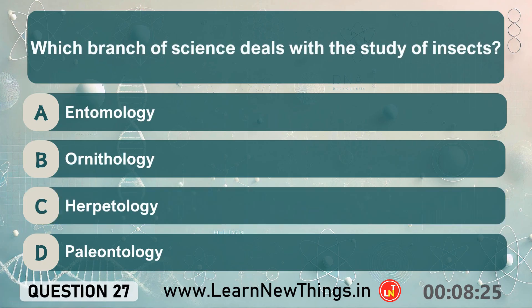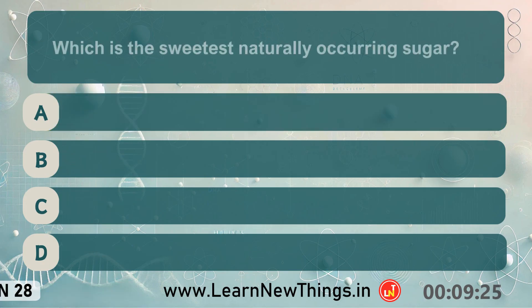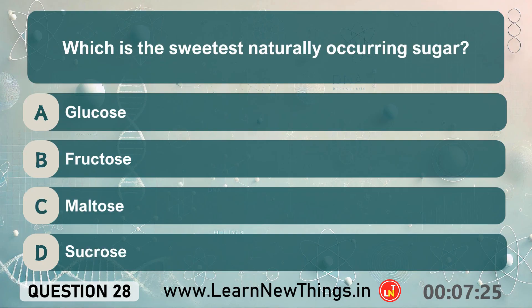Which branch of science deals with the study of insects? Entomology. Which is the sweetest naturally occurring sugar? Fructose.